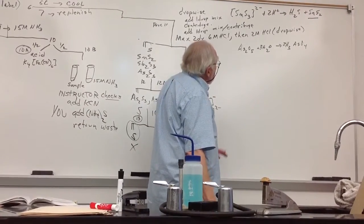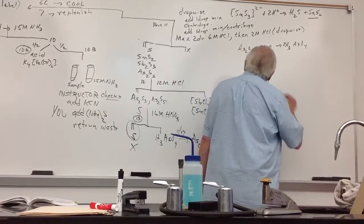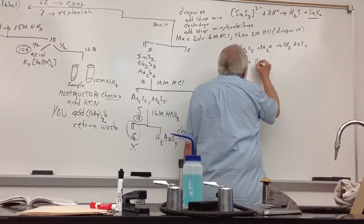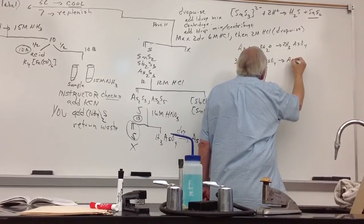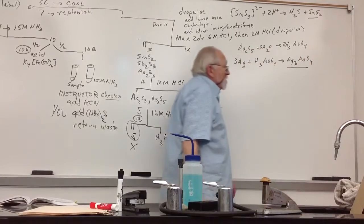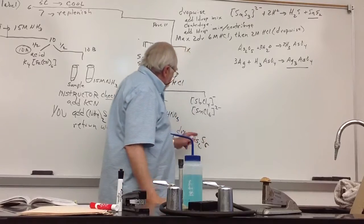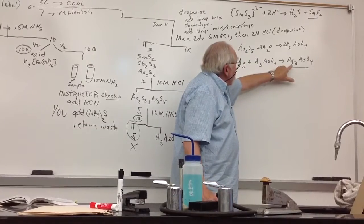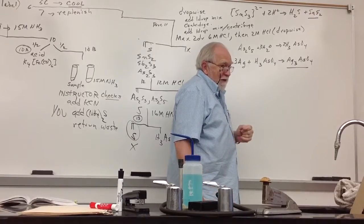If you have too much acid, this still forms. But here's the trick that you need. This is your confirmatory precipitate. It's red-brown. But if you didn't get rid of all of your acid here, and you have too much excess acid, this is more soluble in acid. This is soluble in acid, so you don't make the precipitate.